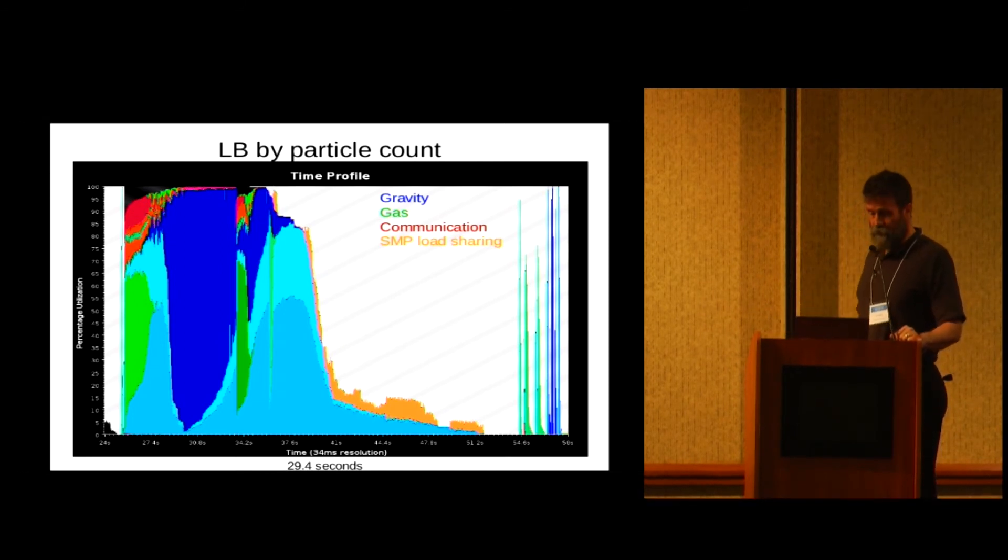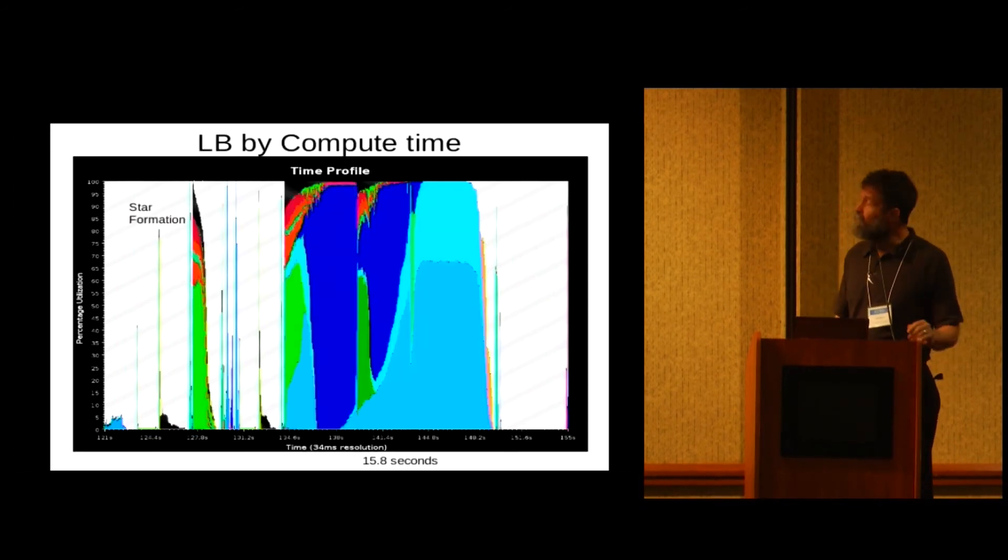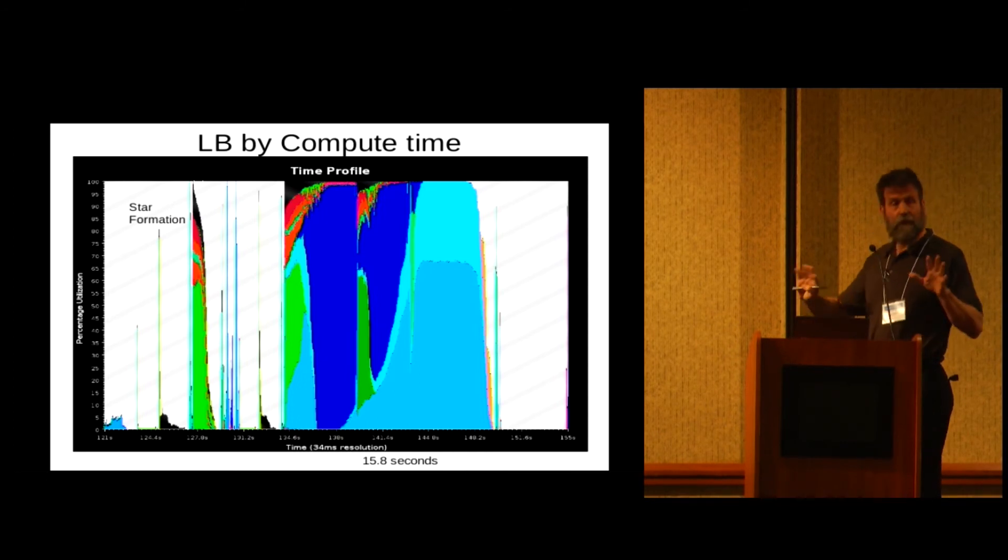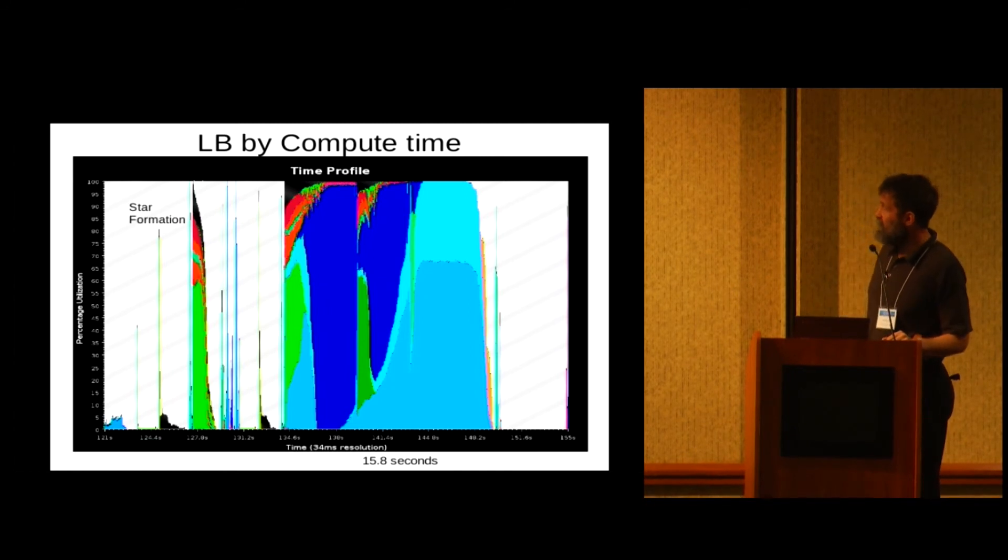So we let the Charm++ runtime system rebalance based on the computational load, and now we shrink that 29 seconds down to 16 seconds because we're able to - again, this is the runtime system doing its job. So this is a simulation of essentially one-tenth scale of what we ultimately want to run on Blue Waters. This gives us encouragement that we can scale to the full machine.